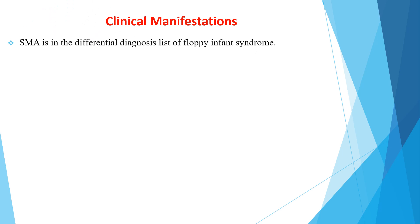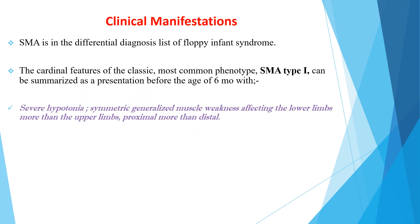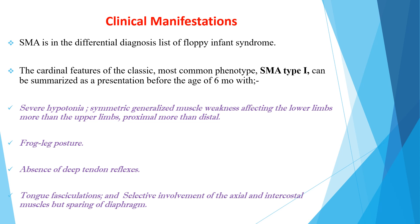When we see the clinical manifestation of spinal muscular atrophy, this problem is in the differential diagnosis list of floppy infant syndrome. The cardinal feature of the most common phenotype, SMN type 1, can be summarized as a presentation before the age of 6 months with severe hypotonia, symmetric generalized muscle weakness affecting the lower limbs more than the upper limbs, proximal more than distal, frog leg posture, absence of deep tendon reflexes, and tongue fasciculations, with selective involvement of axial and intercostal muscles but sparing the diaphragm.